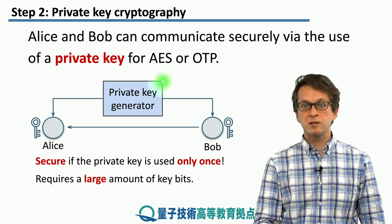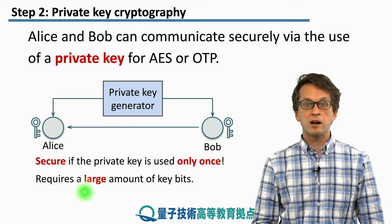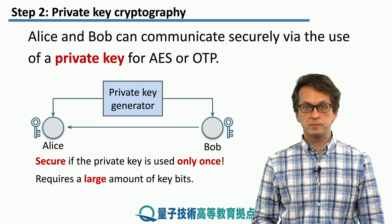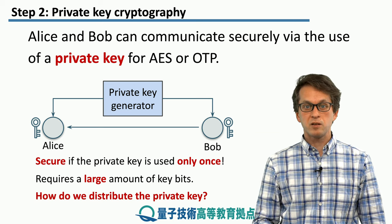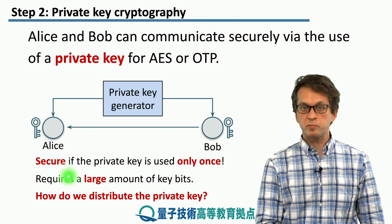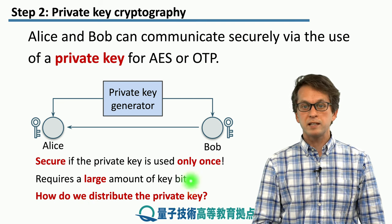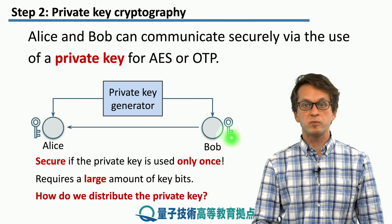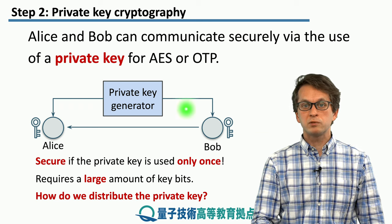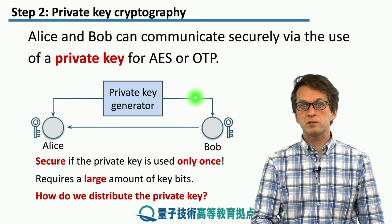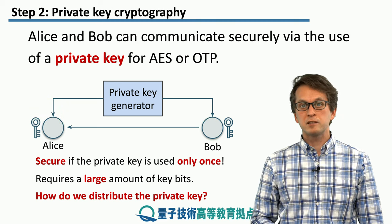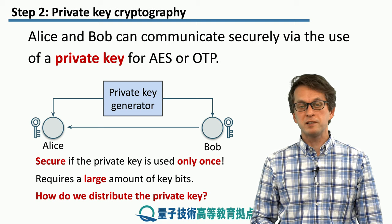As we said, it's not very efficient in the sense that it requires a large number of key bits — the number of key bits has to be at least as large as the message itself. But there is one remaining question: how do we actually distribute this key? In this scenario, we assumed the private key generator can distribute the key to Alice and Bob, but the question remains: what channel should it use, since public channels are monitored. This is where quantum mechanics comes into play, as we will see in the next step.